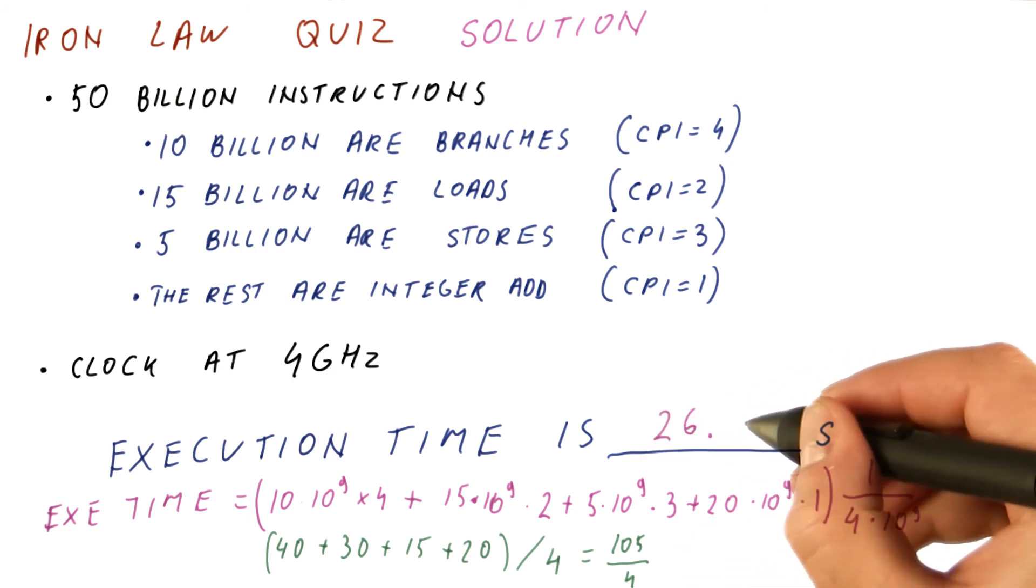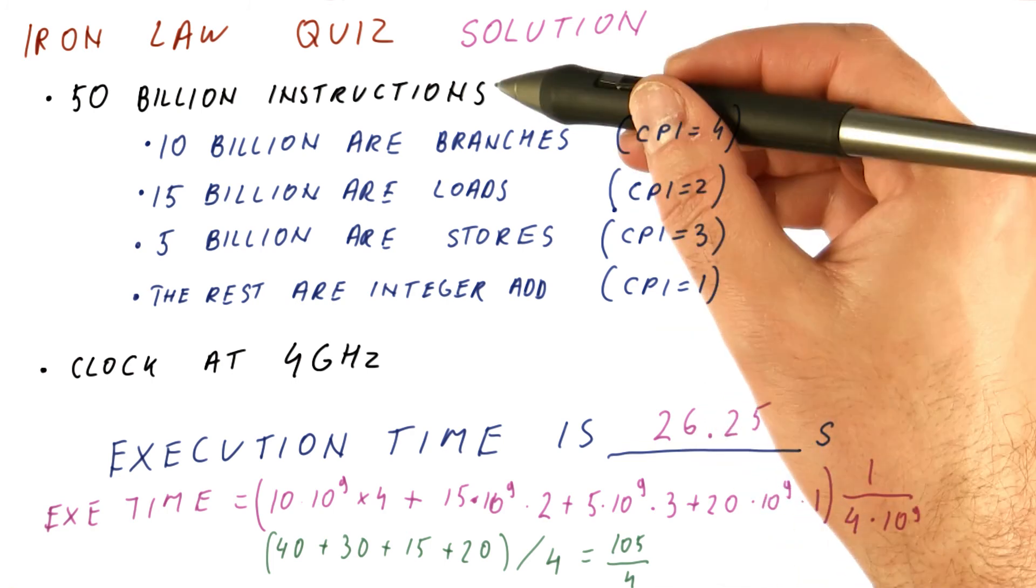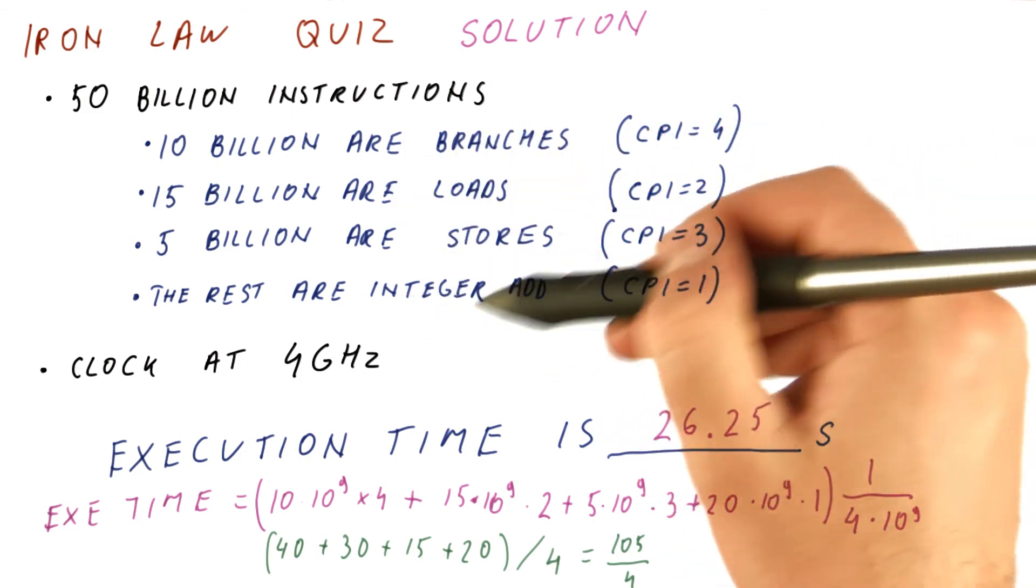which amounts to 26.25. So this is how long it takes to run these 50 billion instructions at 4 gigahertz, assuming these CPIs and this distribution of instructions.